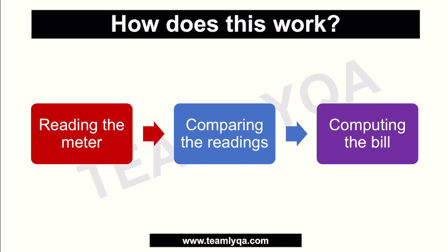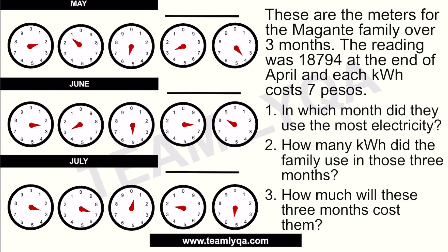That process was discussed in the first video. Now, our first question here is: in which month did they use the most electricity? To find out, we need to look at the given information. First of all, the first number is 18,794 — that was the reading in April. To find the reading in May, we look at these figures.